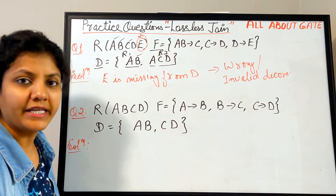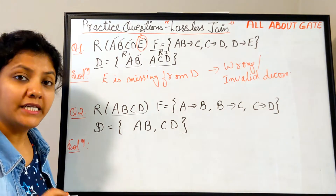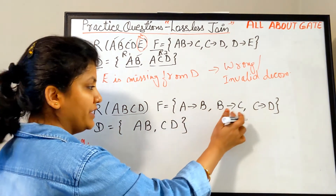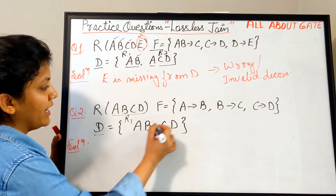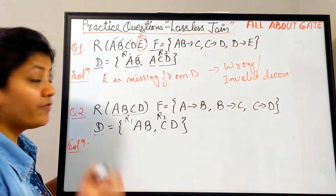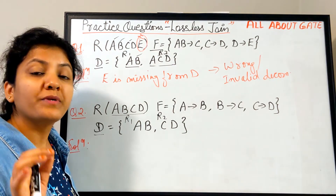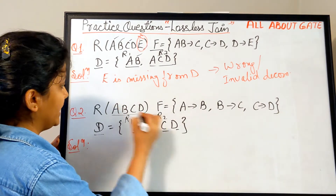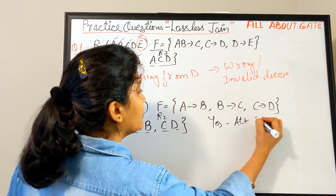Now the second question: relation R has four attributes A, B, C, D. The functional dependencies are A→B, B→C, and C→D. The decomposed set has R1 and R2. We need to check whether it is a lossless join. First, as before, we check for attribute preservation — whether it contains all the attributes. It contains A, B, C, D — all four — so yes, attribute preservation holds.